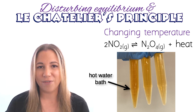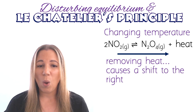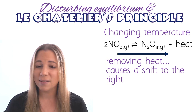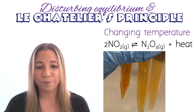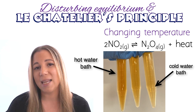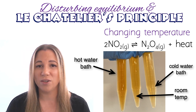Now comparing with the cold water bath — by removing heat, we expect the system to shift to the right to increase the temperature and counteract that disturbance. Since the forward reaction creates a colourless gas, we expect a decrease in colour of the vial. And here we see that to be true. On the left, the increased temperature shifted equilibrium to the left; on the right, the decreased temperature shifted it to the right; and in the middle is our room temperature vial for comparison.